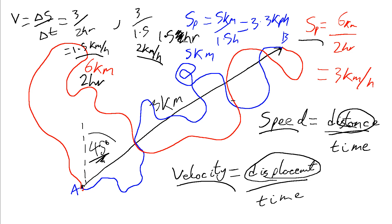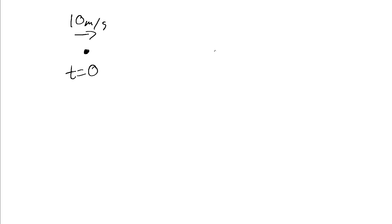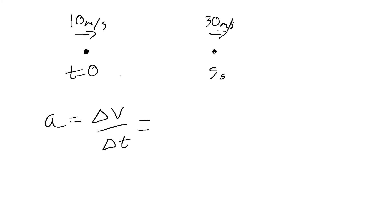Let's run through a quick example on acceleration. For acceleration, we need a change in velocity. Let's say we start with some object at t equals 0, travelling to the right at 10 metres per second. After 5 seconds, it's still travelling right but has sped up to 30 metres per second. Our acceleration is our change in velocity over our change in time: the change in velocity is 20 metres per second, and the change in time is 5 seconds, which gives us 4 metres per second squared. That would be our acceleration in this case.